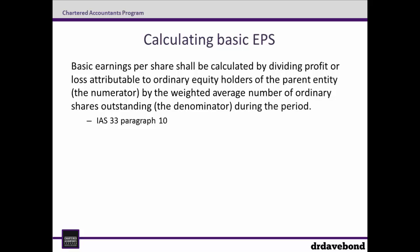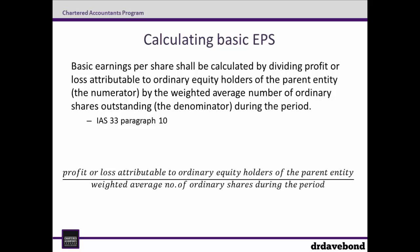IAS 33 is the standard which deals with calculating EPS. Paragraph 10 tells us that basic earnings per share shall be calculated by dividing profit or loss attributable to ordinary equity holders of the parent entity — the numerator — by the weighted average number of ordinary shares outstanding — the denominator — during the period. We can set that up as a formula with profit or loss as the numerator and ordinary shares as the denominator.